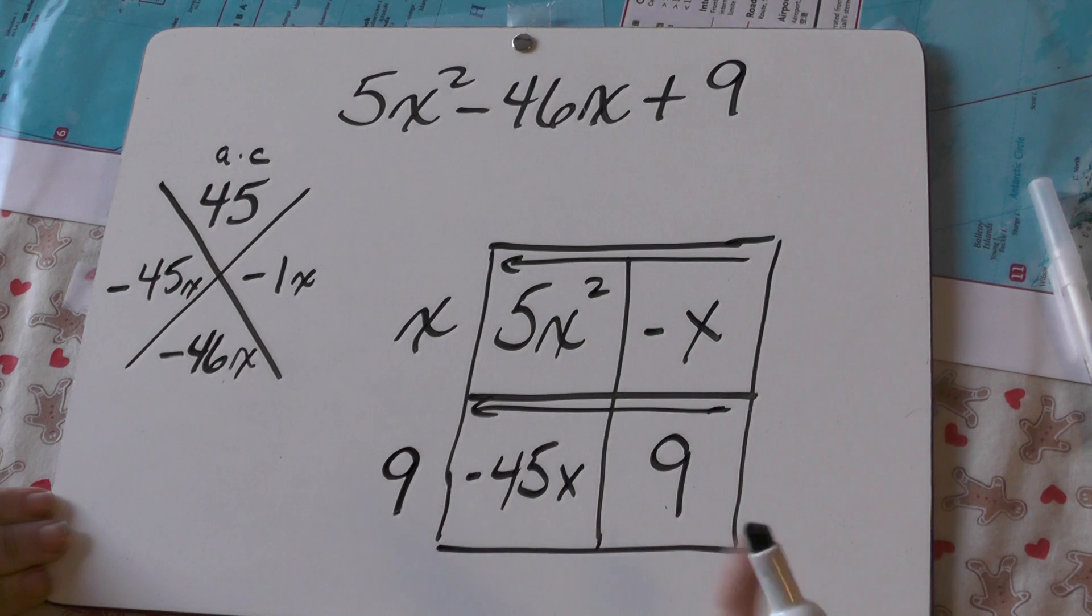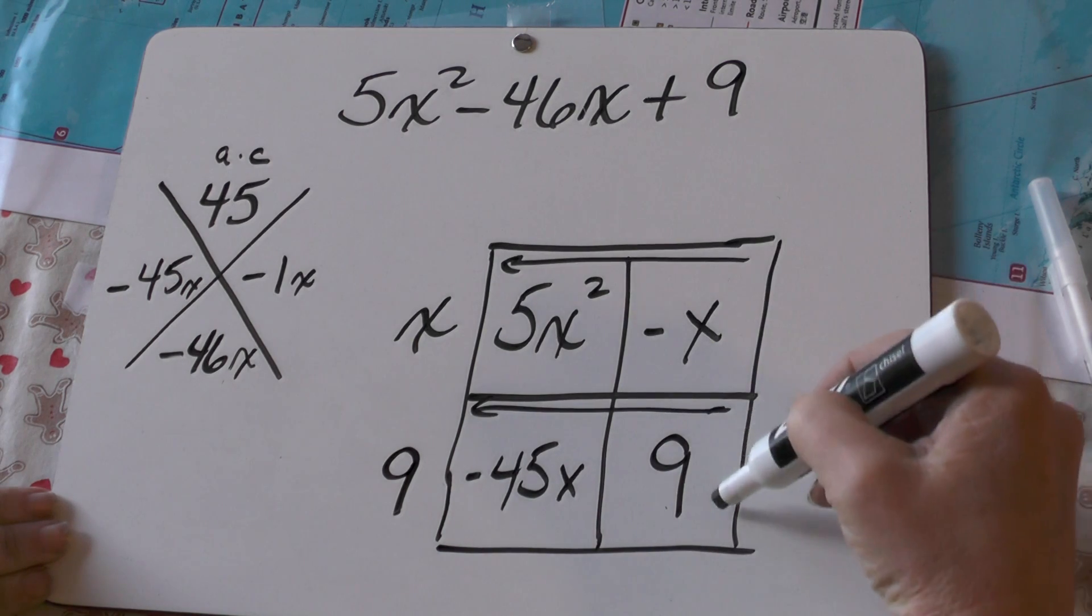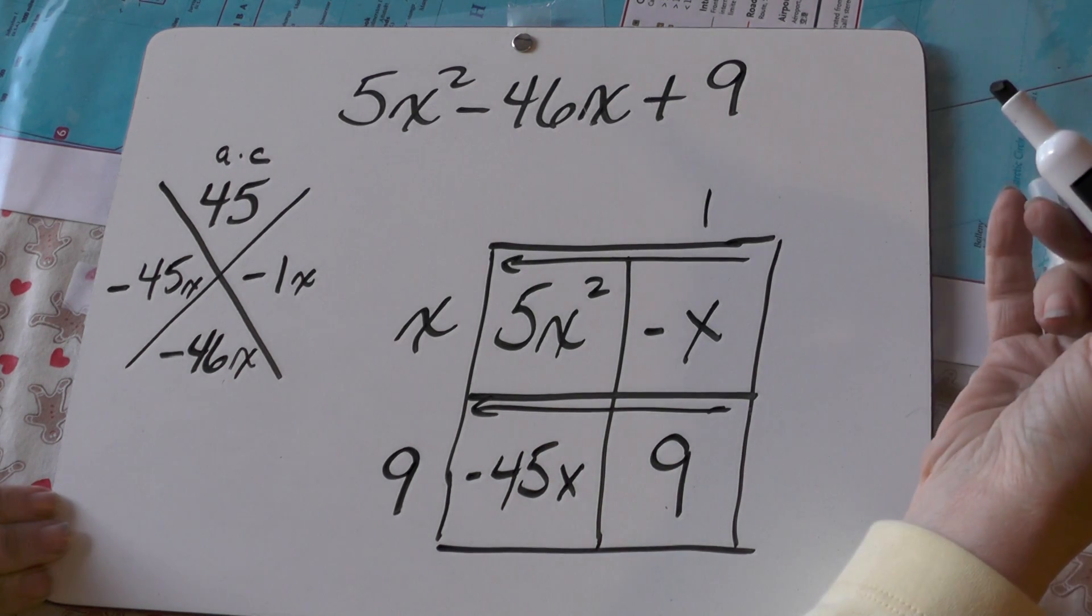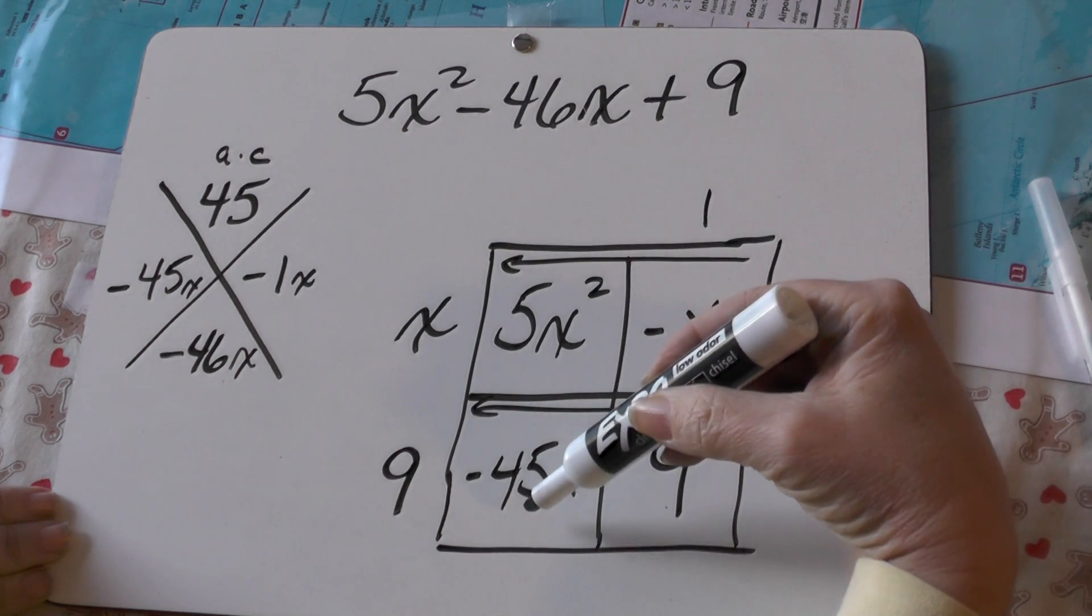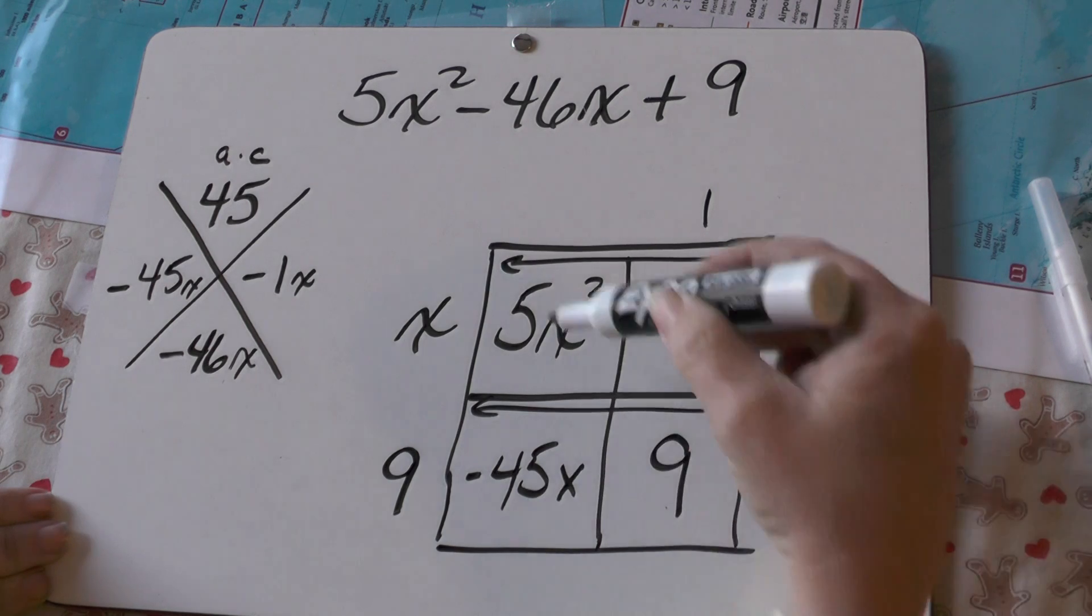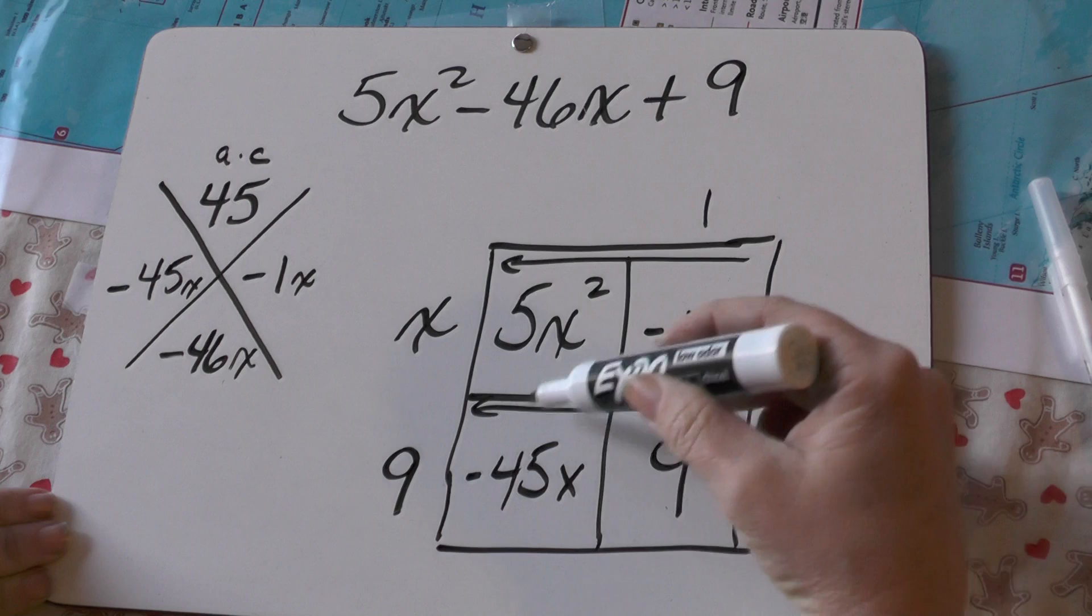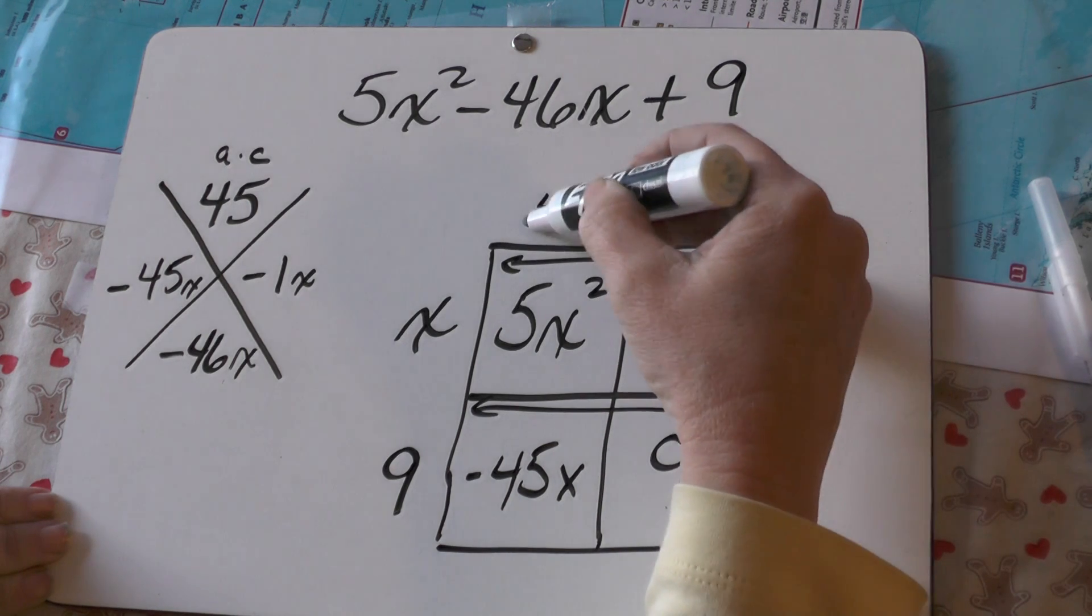Now, going the other direction. Between negative x and 9, I can't really factor anything out but a 1. And, then, between 5x squared and 45x, I can pull out a 5x from each one of these.